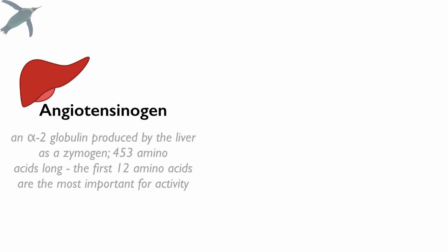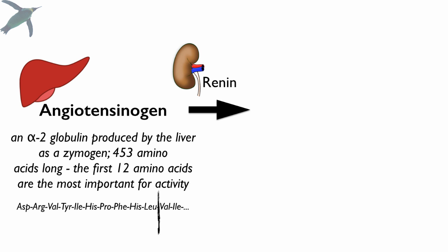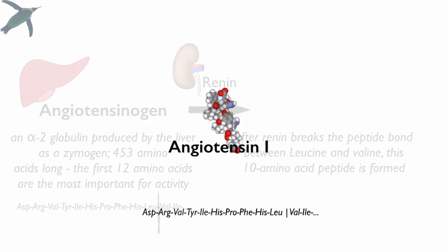The liver is where we start. It produces a protein called angiotensinogen — 453 amino acids long, but the first 12 amino acids are the ones we are interested in. Angiotensinogen is produced all the time and released constantly by the liver, but it is completely inactive. However, if it runs into the enzyme renin produced by those granular cells, there is a hydrolysis between two amino acids, and what you get is a decapeptide called angiotensin-1. Angiotensin-1 is also not biologically active.